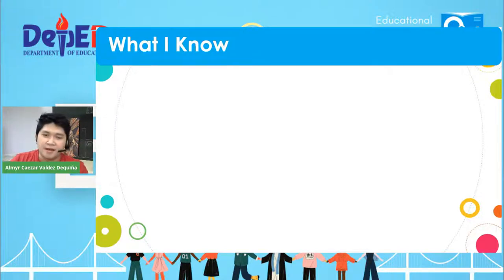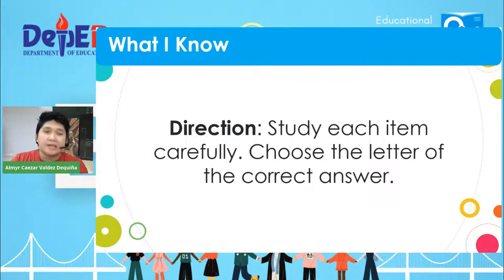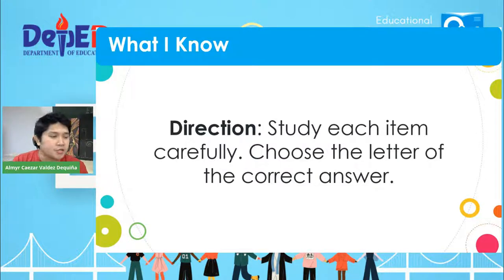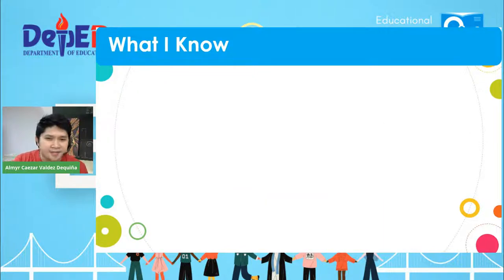Maybe you know some of the well-known personalities in the world of journalism — and malay natin, one of you might be the next big name in journalism, the next TV personality. Before we delve into the topic, let us try answering some questions to see what we already know about the features of journalistic writing. I'm not really expecting you to get all the right answers right now — kasi pre-assessment pa lang ito. Direction: Study each item carefully and choose the letter of the correct answer. I strongly encourage you to read along even from your homes.